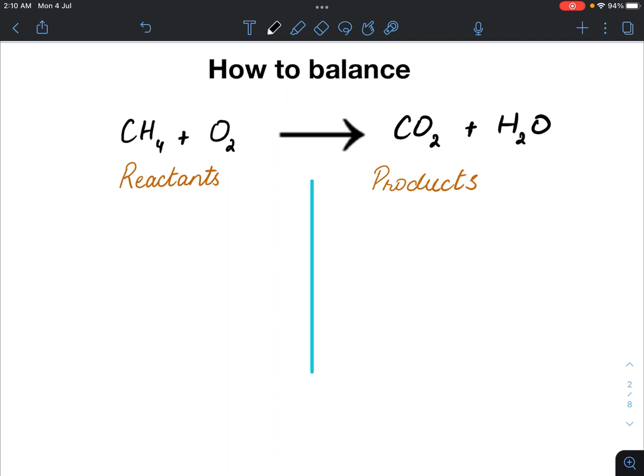To see if this equation is balanced, we must count the number of atoms on the reactant side and the product side. Starting at the reactant side, we have one carbon atom, four hydrogen atoms, and two oxygen atoms.